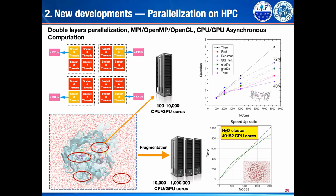We also introduced a double-layer parallelization to treat very large systems. Using fragmentation techniques, we developed an automatic fragmentation algorithm that can fragment a big system into smaller subsystems. A small subsystem can be mapped onto one node or several nodes, while a large system can be mapped onto very large machines. In tests for large-scale DFT calculations, we can use about 8,000 CPU cores, and with the fragmentation scheme, more than 10,000 CPU cores can be used.